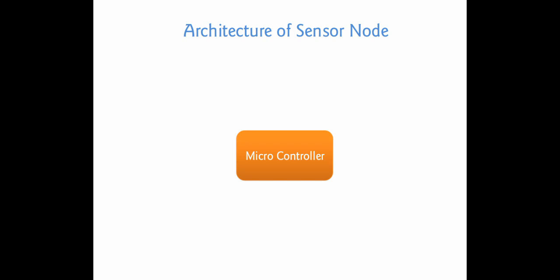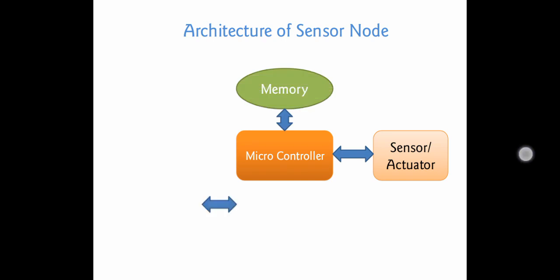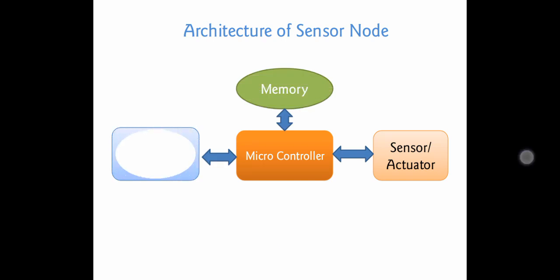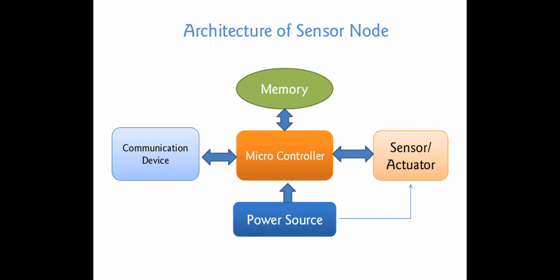The processing unit is the heart of the sensor node and it acts like a CPU. The sensing device has a sensor or actuator — these are the physical devices — along with memory, communication device, and finally the power supply. We have to provide the power supply to the sensing device as well as to the processing unit and communication device.